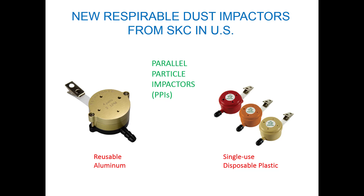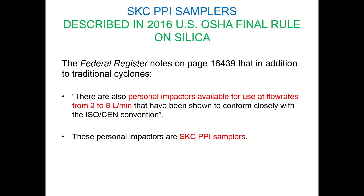Next, I would like to discuss a new respirable dust impactor that has been hugely popular with industrial hygienists in the US. The parallel particle impactors, or PPIs, are available in reusable aluminum or single-use disposable plastic. Most users prefer the plastic models since no assembly is required and they are easier to use. The SKC PPI samplers are described in the 2016 US OSHA final rule on respirable crystalline silica. Specifically, the Federal Register states that in addition to traditional cyclones, there are also personal impactors available for use at flow rates from 2 to 8 liters per minute that have been shown to conform closely to the ISO-CEN convention — these are the SKC PPI samplers.